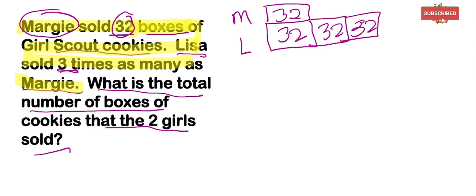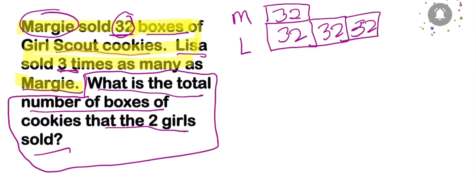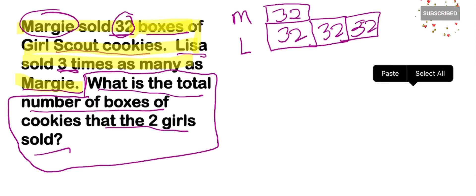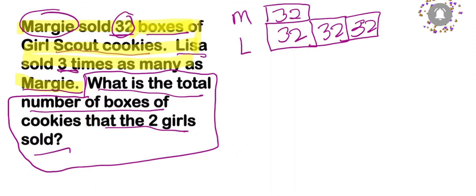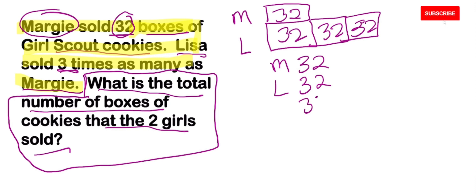This brings us to step two of our problem: what is the total number of boxes of cookies that both girls sold? Let's add. We're going to write 32 for Margie, and then 32 three times for Lisa, because she sold three times as much.